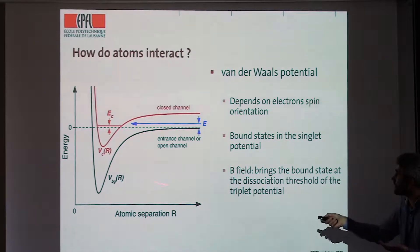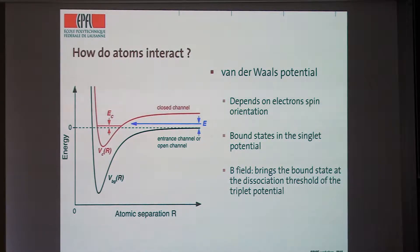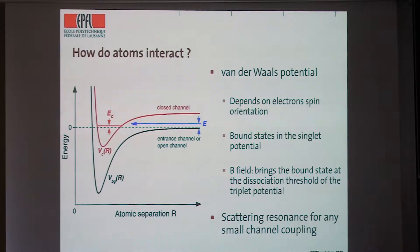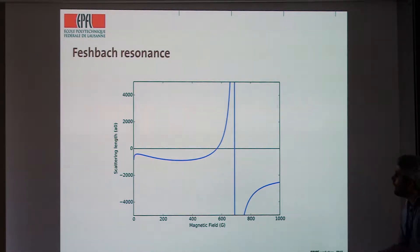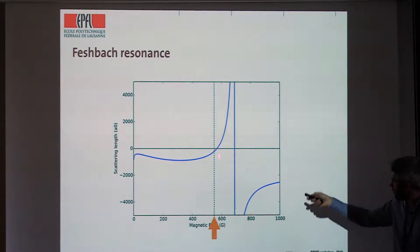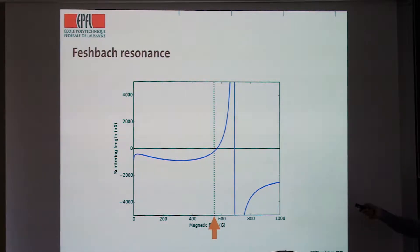When a hyperfine mixing mechanism couples the two channels, you get a scattering resonance — the atoms hybridize a little bit with the molecular state before coming out, producing a divergence of the scattering length. This is the Feshbach resonance. For all practical purposes, by changing the homogeneous magnetic field, we can change the way atoms interact with each other. For lithium atoms this phenomenon is extremely strong. You can work at around 550 Gauss where the scattering length is very low (weak interactions), which is the situation I showed before with essentially non-interacting particles.